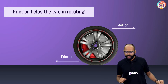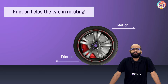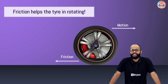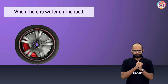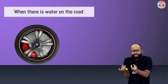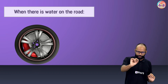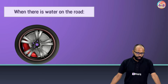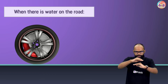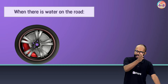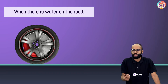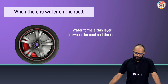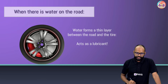The problem arises not on a sunny or dry day — the problem arises when it rains. When it rains, traveling becomes really difficult. When there is water on the road, that slimy wet muddy surface creates issues. Water forms a layer between the surface and the tire, and it works like a lubricant. The tire wants to rotate but the water is acting like a lubricant and not giving enough friction for it to rotate nicely.